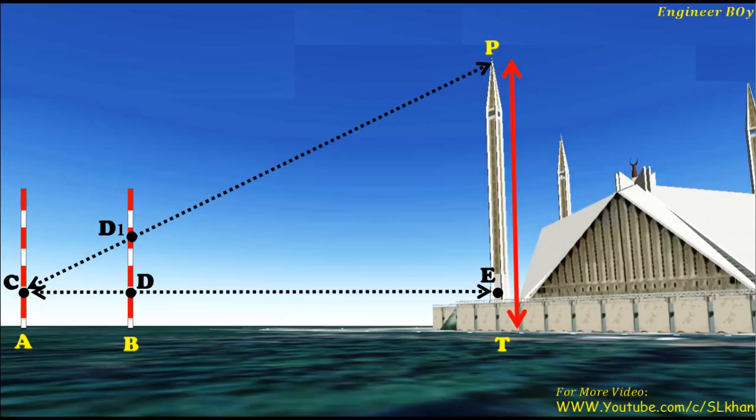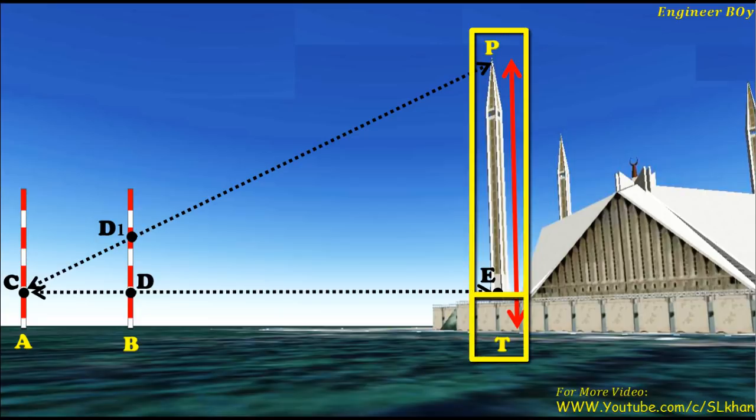Now using similar triangle rules we can calculate PE, and then by adding ET we can get the total height of the tower.